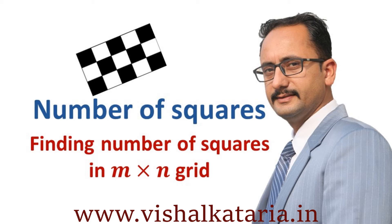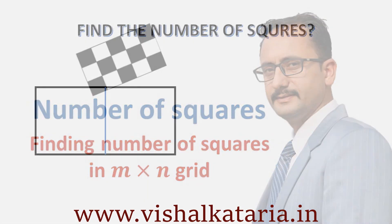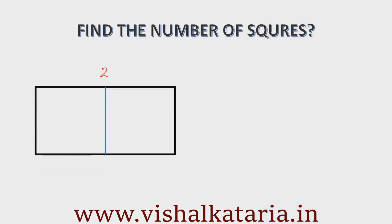Let's start with a simple example. If I ask how many squares are there in this 2 by 1 rectangular grid, the answer is very simple — there are only 2 squares and both squares measure 1 unit by 1 unit.